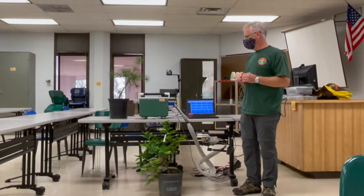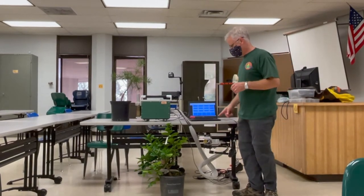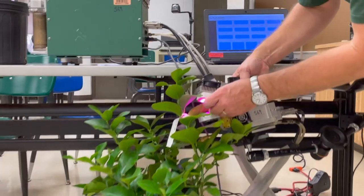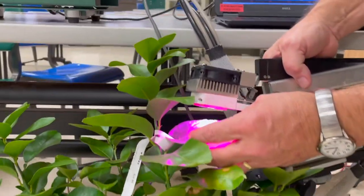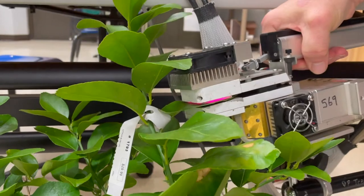First, what we're going to do is put a citrus leaf in the chamber. You want to put it in there so it covers up the entire opening in the chamber, and we seal it in there.